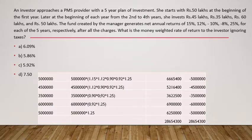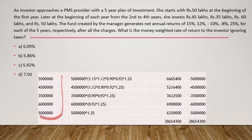In this particular question, there is a portfolio management scenario. An investor approaches a PMS service provider with a five-year plan of investment. The investor starts with 50 lakhs at the beginning of the first year. Later, at the beginning of each year from second to fifth, she invests 45 lakhs, 35 lakhs, 60 lakhs, and 50 lakhs respectively — as listed here.